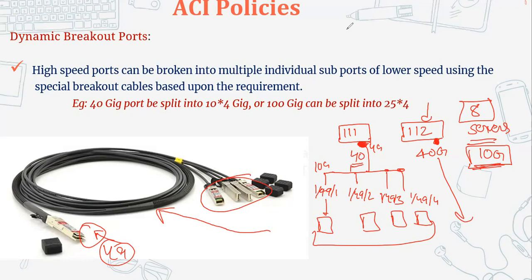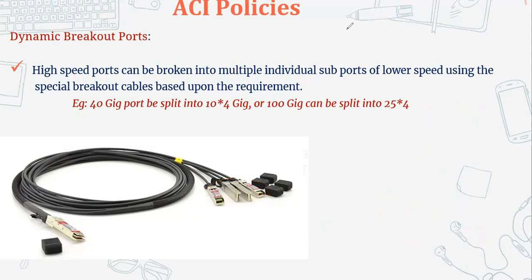This is how we can break out our ports into multiple ports in ACI. You can have any requirement - maybe you have a 100G port on your ACI and you want to break it out into eight ports of 25 gig. You can break out in multiple fashions in ACI. Let's see on the APIC GUI how we can do that.